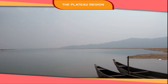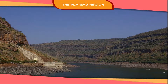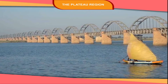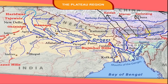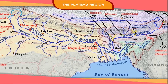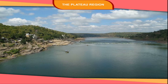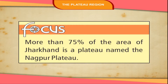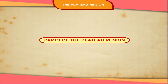Many rivers flow in this region like the Mahanadi, Godavari, Krishna, Kaveri, Narmada and Tapi. The rivers Godavari, Krishna and Kaveri flow from west to east and fall into the Bay of Bengal. The Narmada and Tapi rivers flow westwards and fall into the Arabian Sea. More than 75% of the area of Jharkhand is a plateau named the Chotanagpur Plateau.